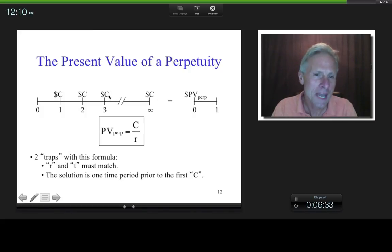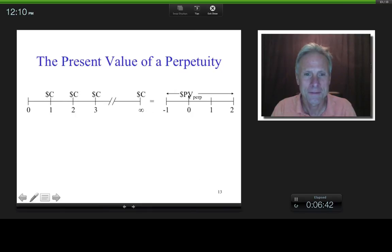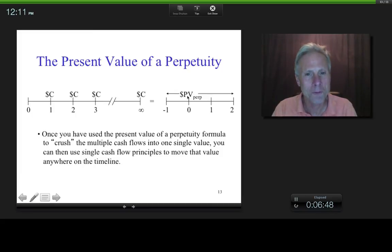What if the first cash flow had been at time three? What if these guys were not there? Then what would the solution be? At time two, right? So in any case, step number one, you can apply the perpetuity formula to crush it into one single number at one single time period. And then, if you want to, can you use single cash flow principles to move this anywhere along the timeline you want to? You could, right?